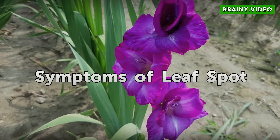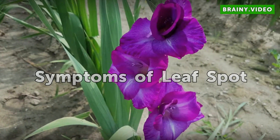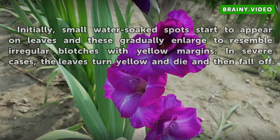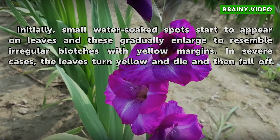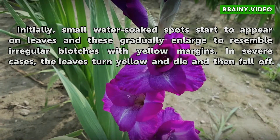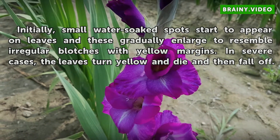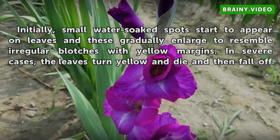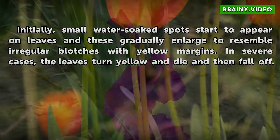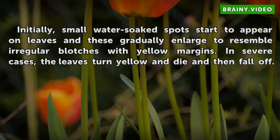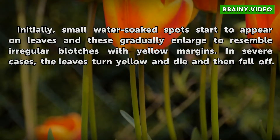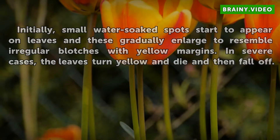Symptoms of leaf spot: Initially, small water-soaked spots start to appear on leaves and these gradually enlarge to resemble irregular blotches with yellow margins. In severe cases, the leaves turn yellow and die and then fall off.